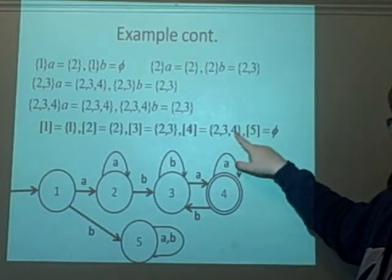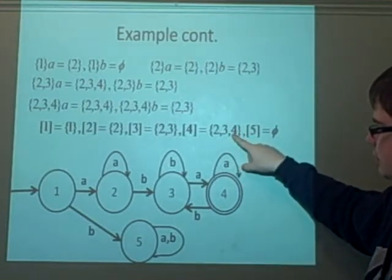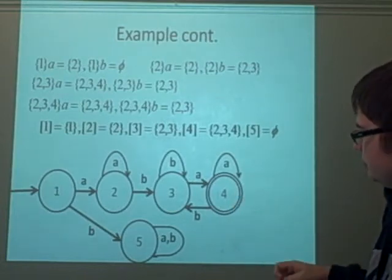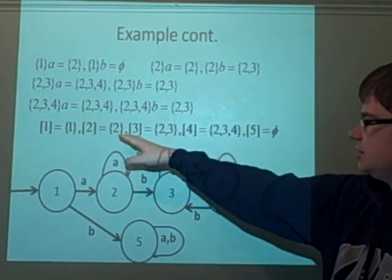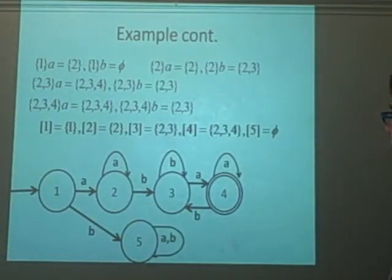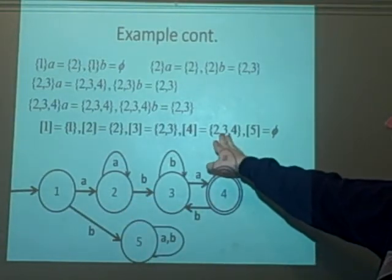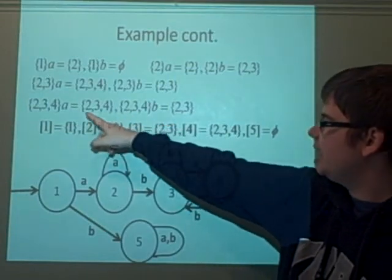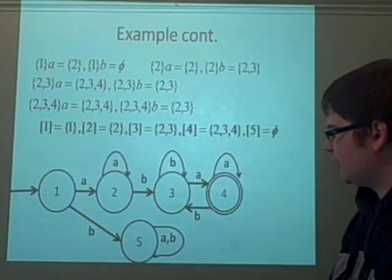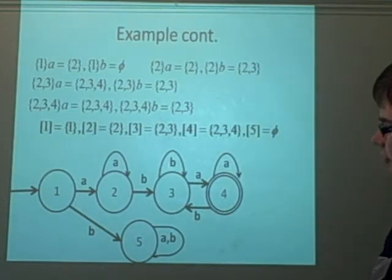Remember, it contains the final state, number 4. So this is also a final state. If that was also included, say over here, if it's 2, 4, then this would also be a final state. What happens when we do stuff to this set? If we apply A, it stays where it is. If we apply B, it goes to 2, 3, so back here. And this is our final DFA.